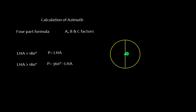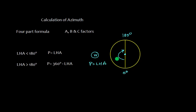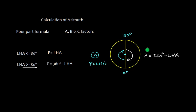Suppose this is the center, this is the pole, and you are looking from the north pole. This is 0 degrees and this is 180 degrees. LHA is measured westerly from the observer. If the body is in this direction, it is westerly and we say P is equal to LHA. Now if the LHA is more than 180 degrees, P will be 360 degrees minus LHA and the body will be on the easterly side.